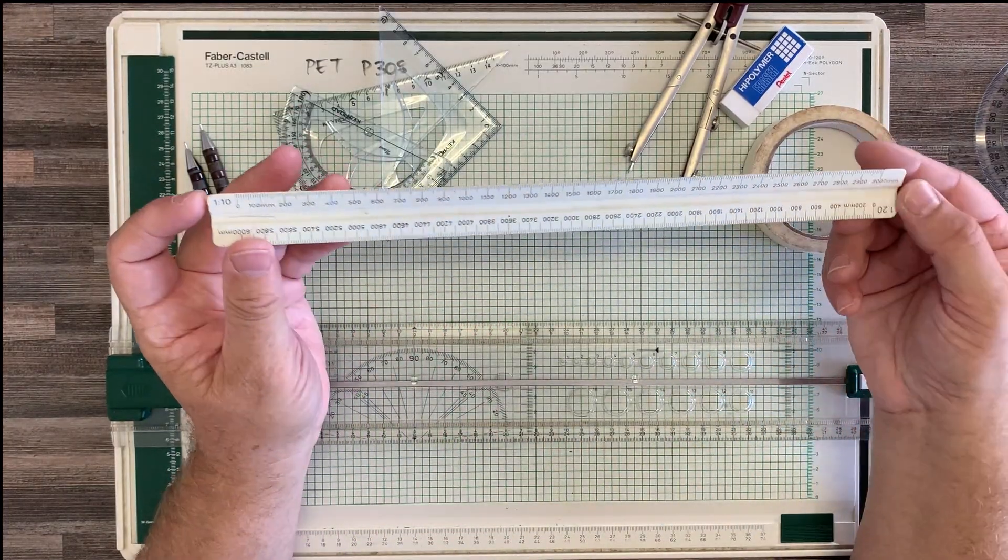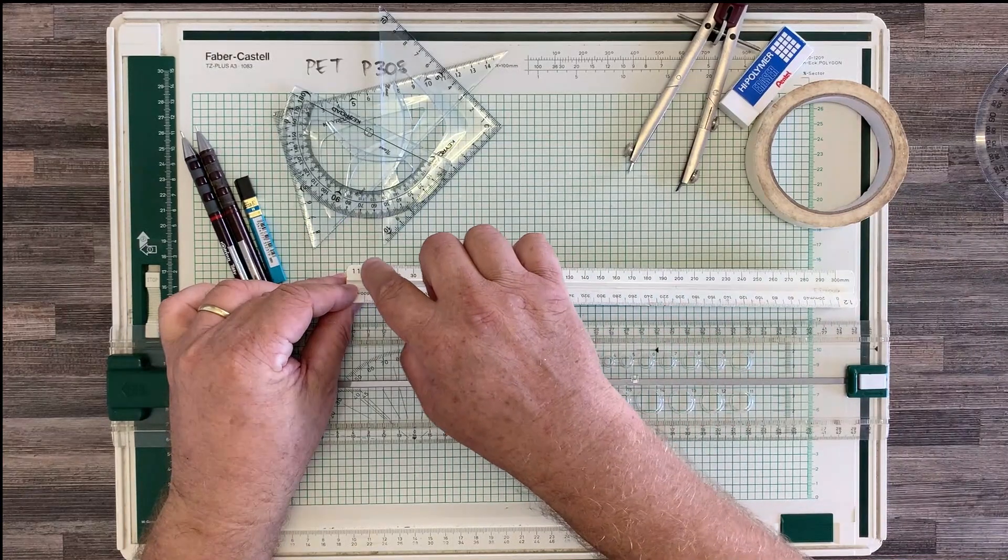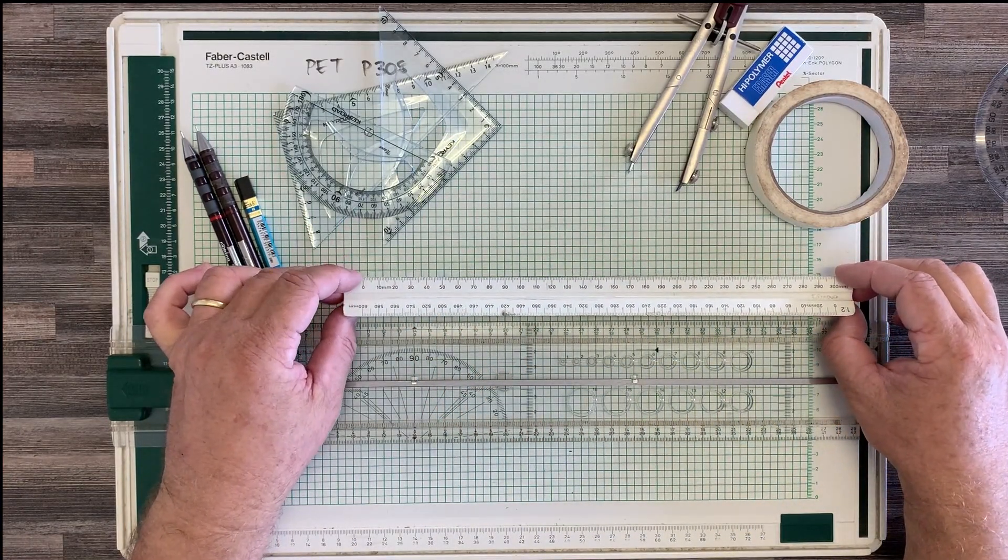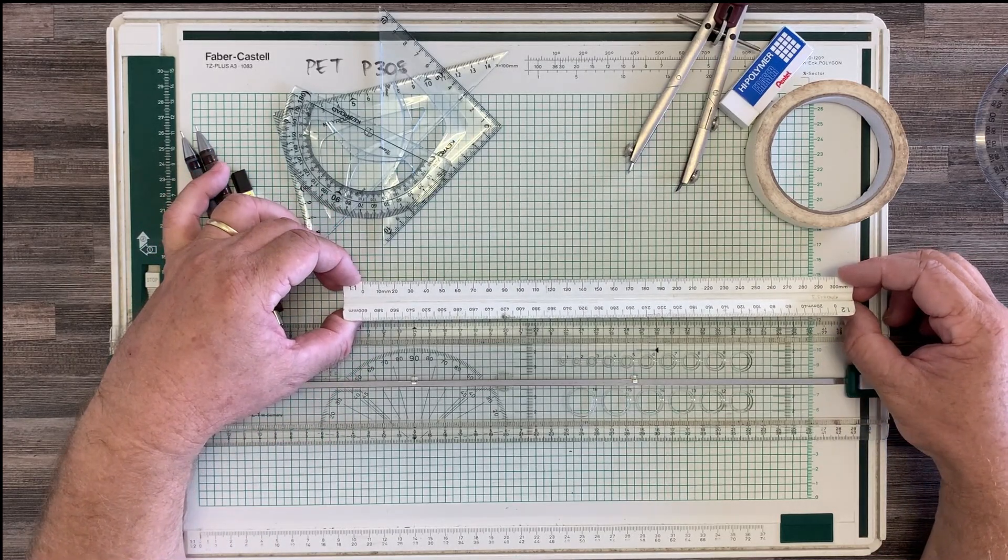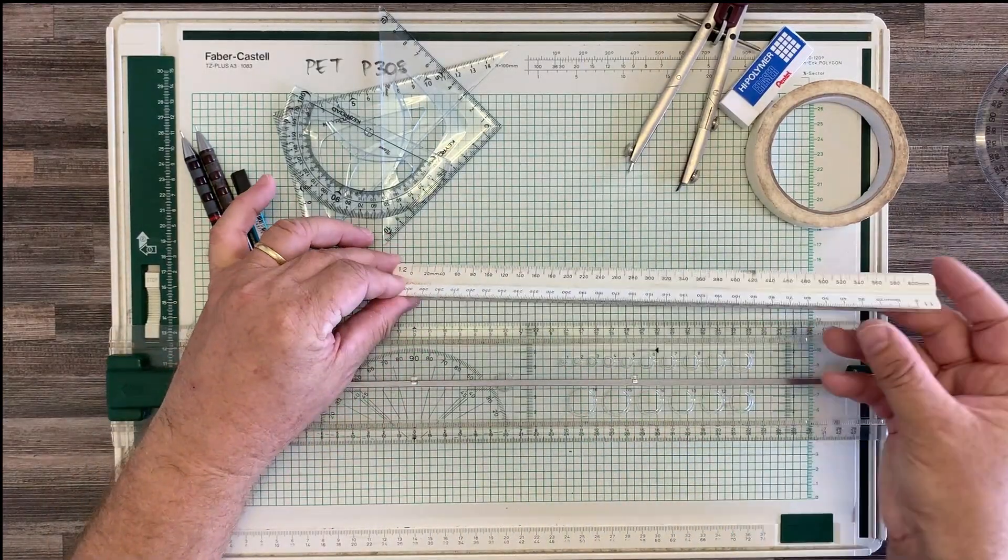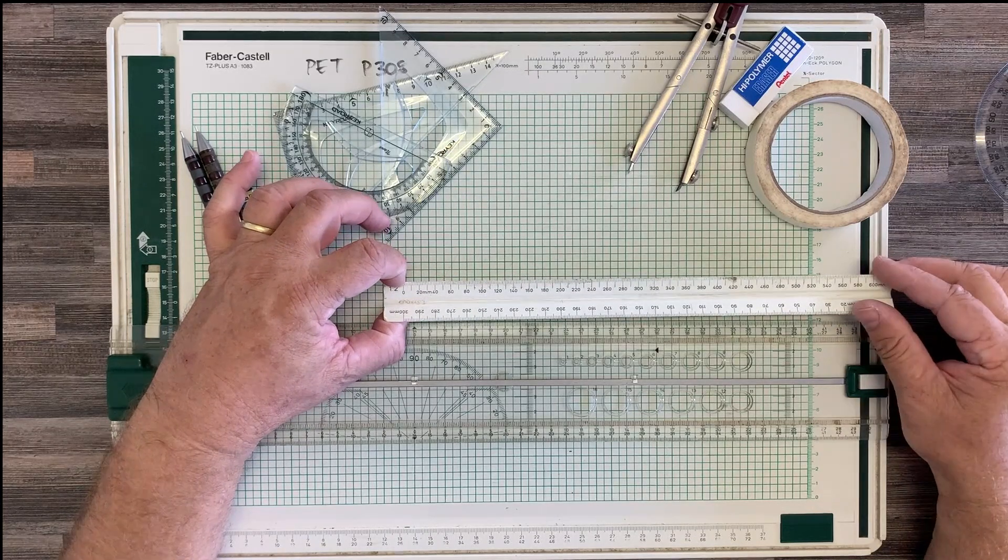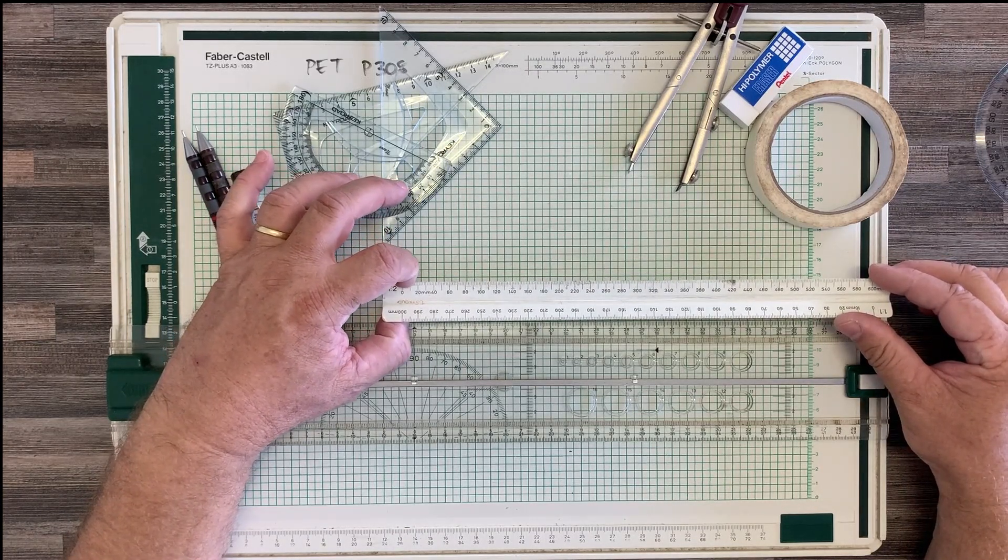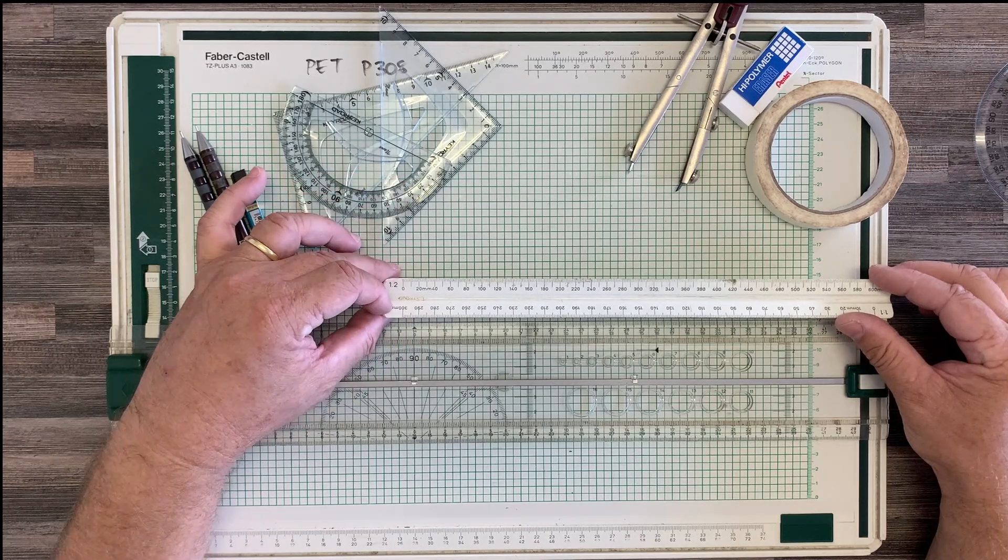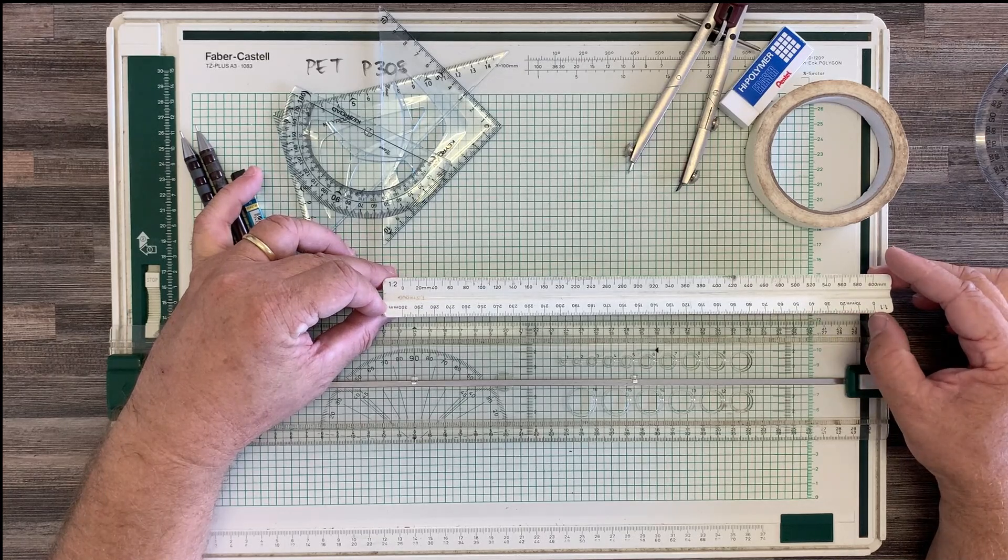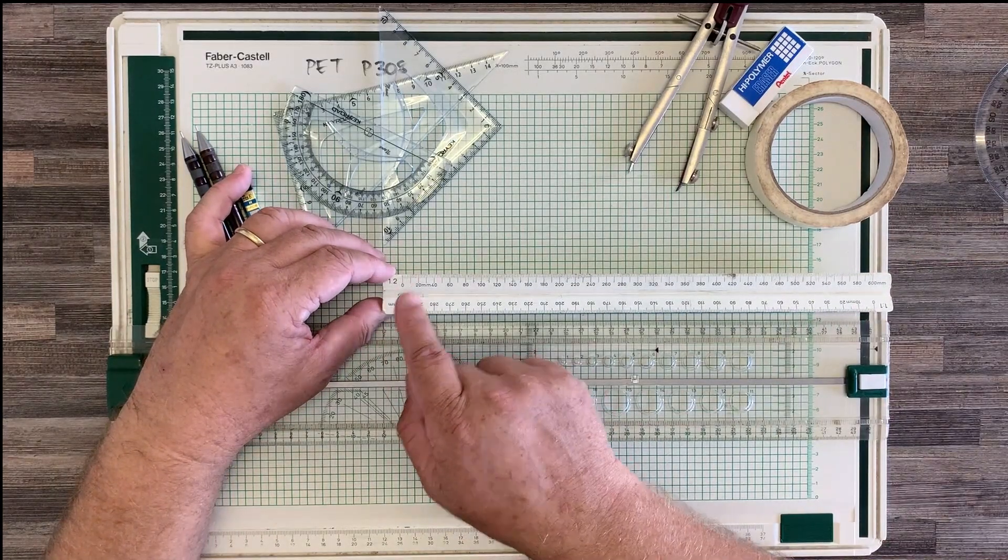Then we have a scale ruler, and this, as you can see, has three edges to it, but it's got six scales. All right, so we start with the first scale here, 1 to 1. That means that one millimeter on the scale is equal to one millimeter in real life. If we go over to the 1 to 2 scale over here, 20 millimeters is actually 10 millimeters, so you would actually draw at half the size with this scale of your ruler because 1 to 2.